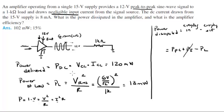PDC is the power delivered, we found it is 120mW, minus PL which is 18mW, and this comes out to be 102mW. That's the power dissipated. So you can see the answer is correct right here.